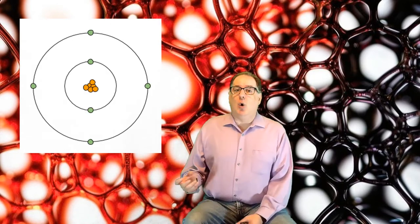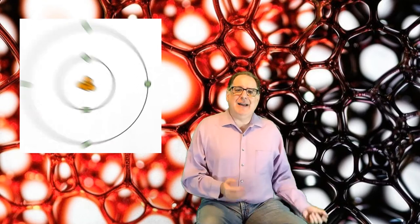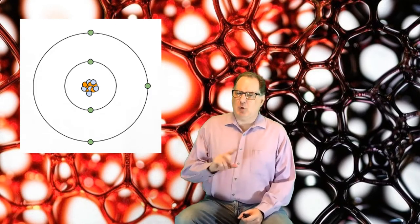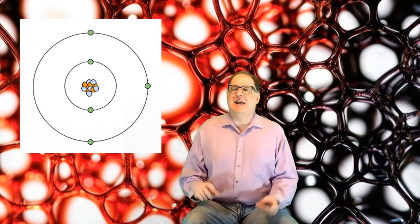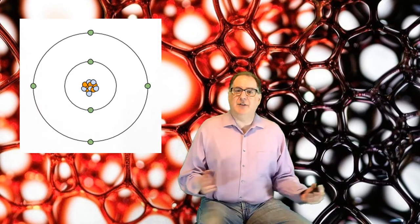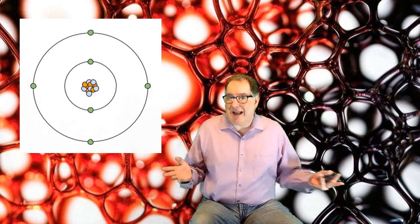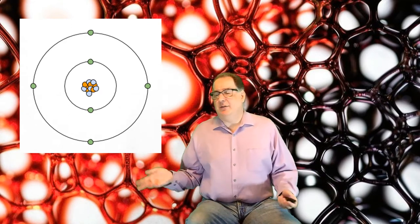Okay, carbon has six protons, so its atomic number is six. It also has six electrons, or it wouldn't be a carbon atom. It would be a carbon ion. Recall, an ion is just an atom that has gained or lost some electrons, so it has a charge. Atoms have the same number of protons and electrons, so they don't have a charge. The minus from the electrons cancels out the positive from the protons.